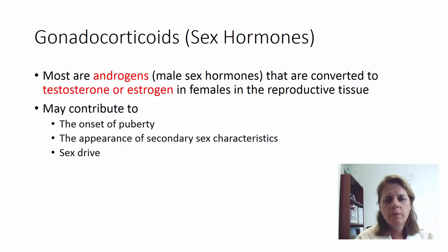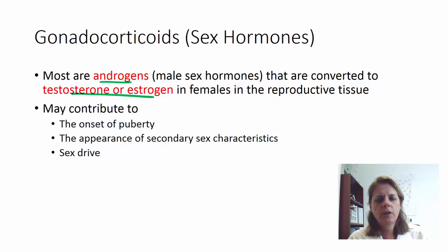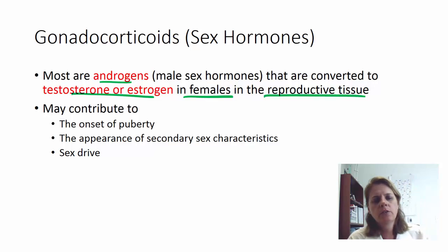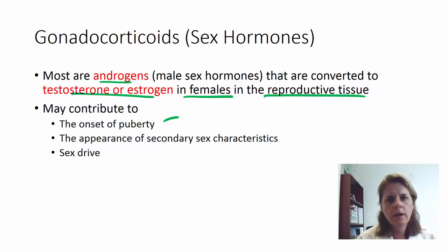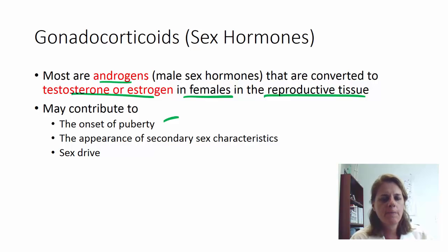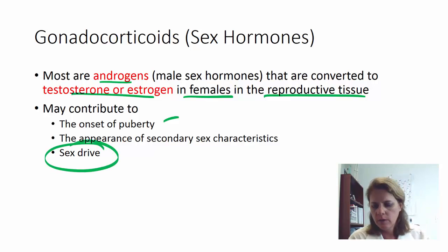The gonadocorticoids are your sex hormones. Most are androgens, which are male hormones, and these are converted into testosterone and estrogen in the reproductive tissue as needed. They may contribute to the onset of puberty and play a role in the appearance of secondary sex characteristics such as facial hair, axillary hair, breast buds, and sex drive — so some sex hormones come from the adrenal glands rather than the testes and ovaries.